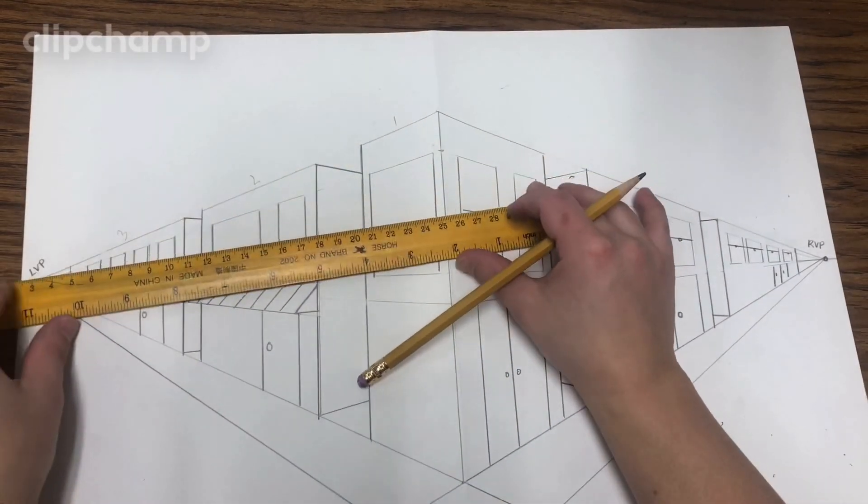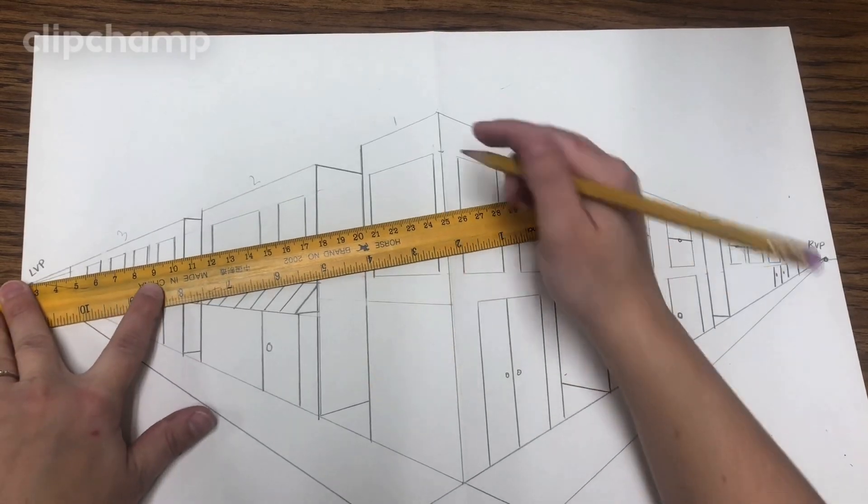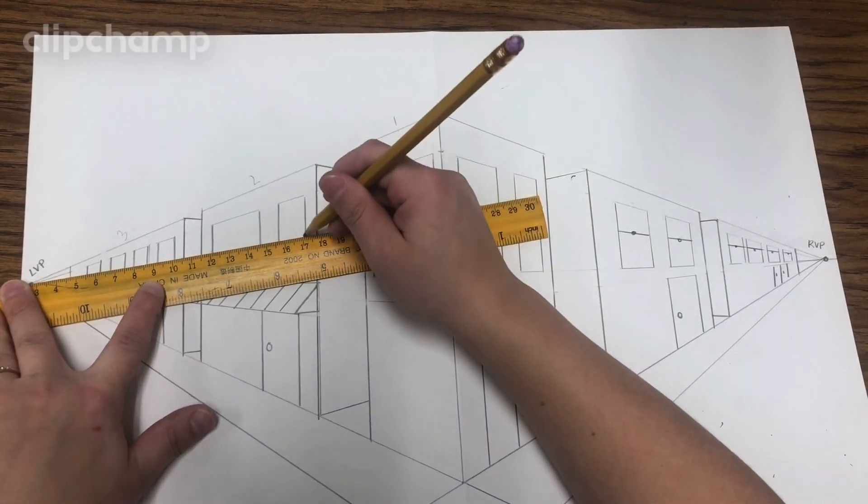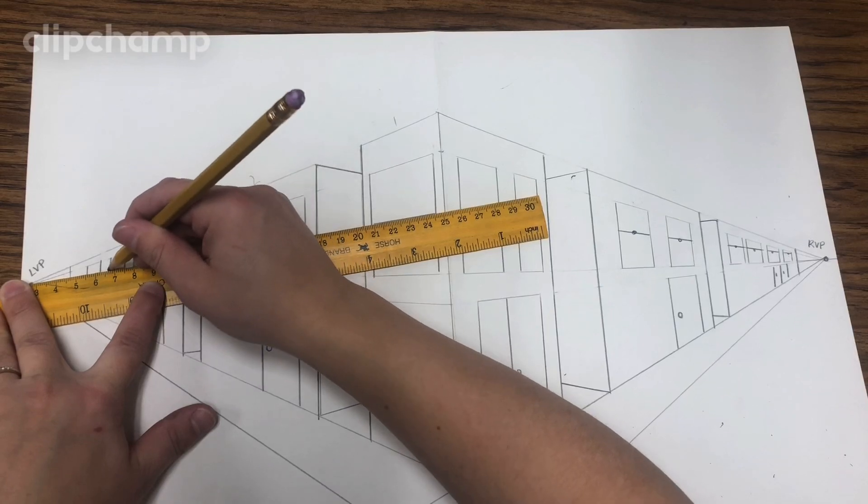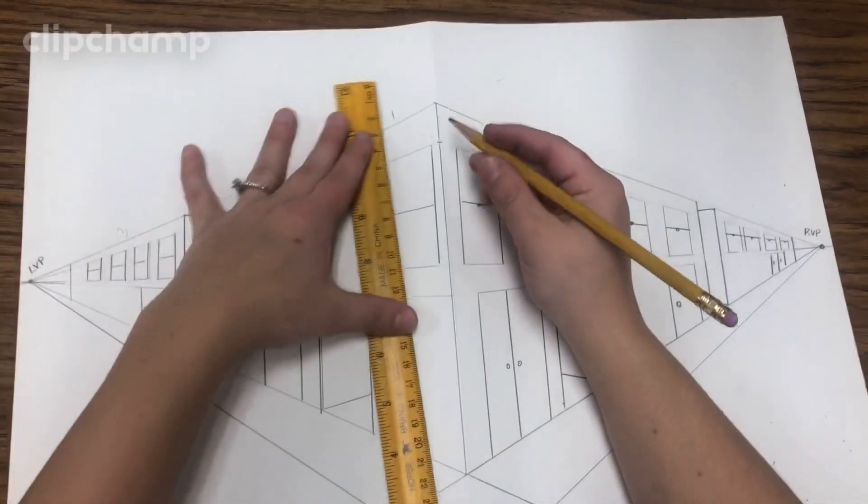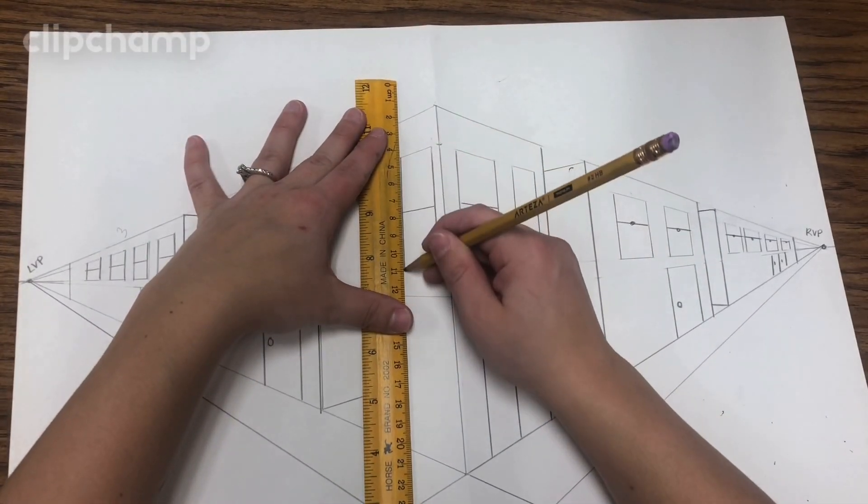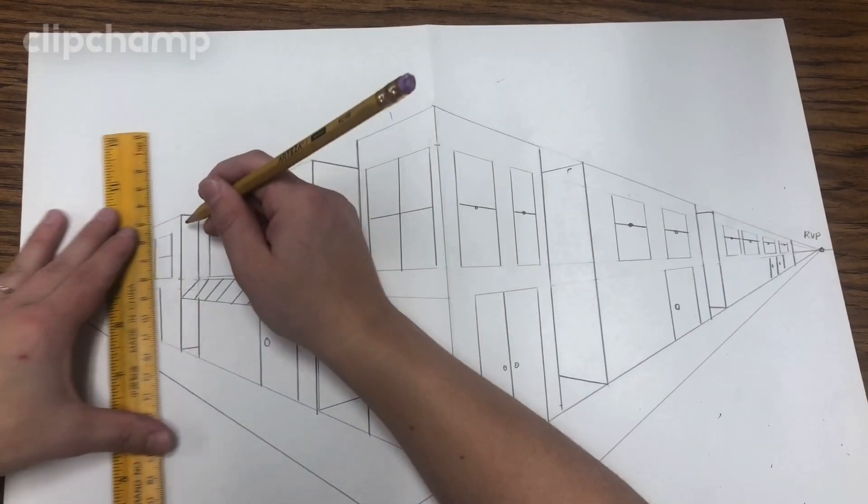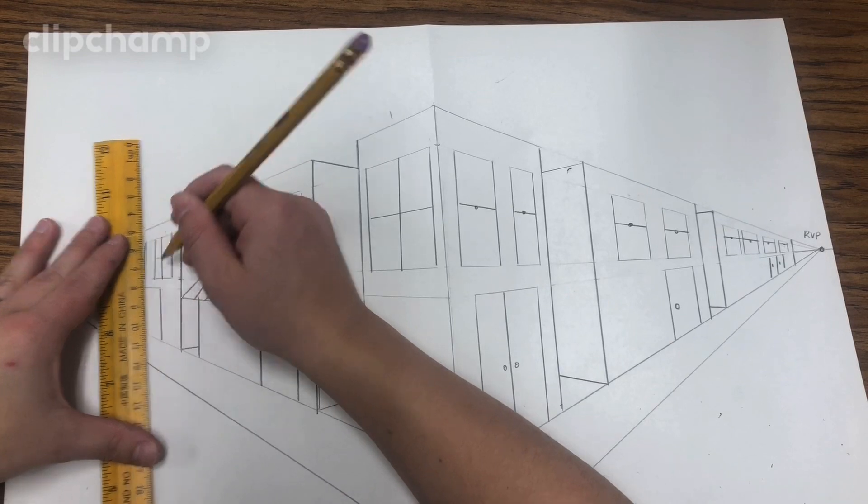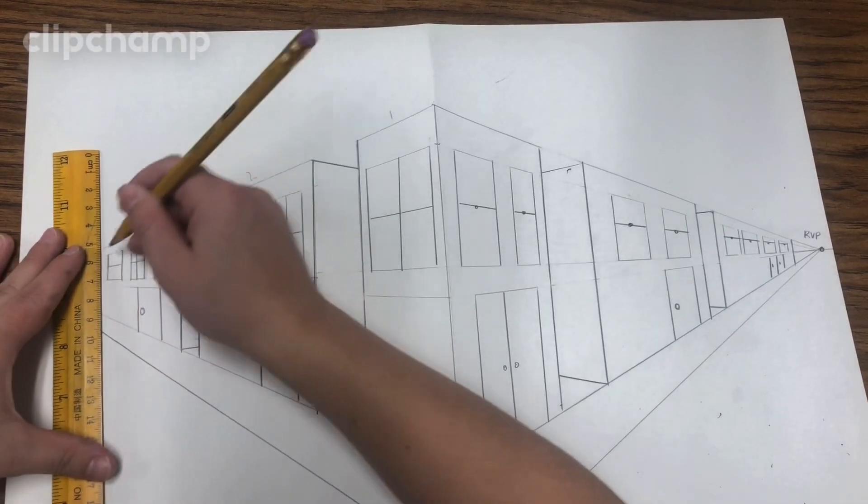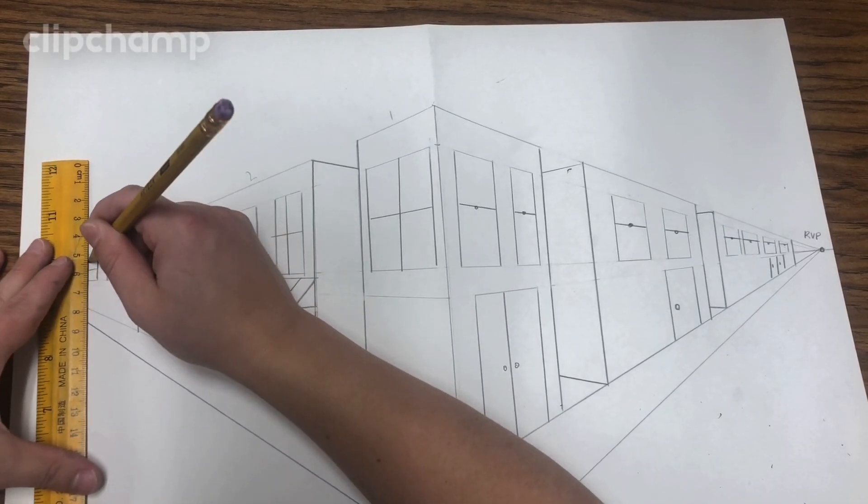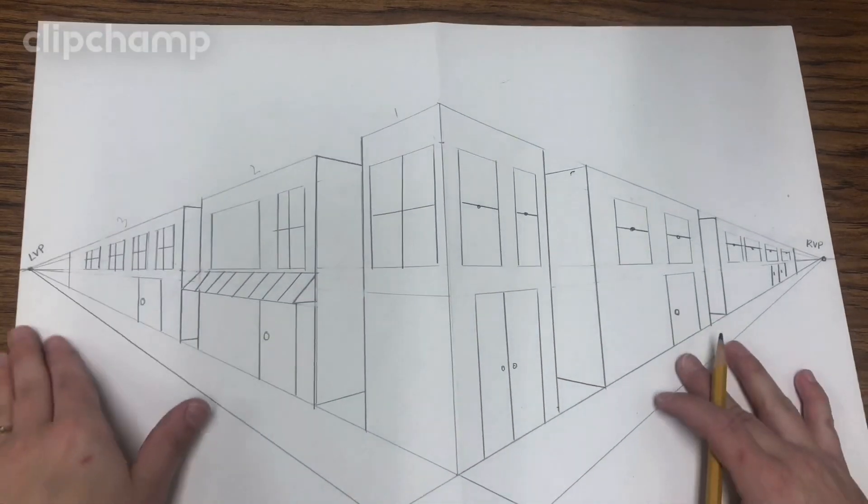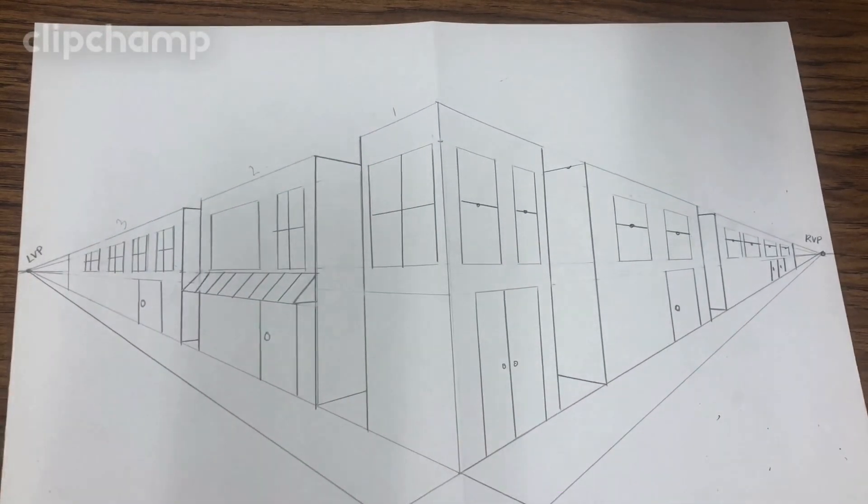So then another idea for your windows would be, same thing, window panes going this way. But this time, create a parallel line to cut it in half. So that's another style of window. Then finally, we can think about some signs.